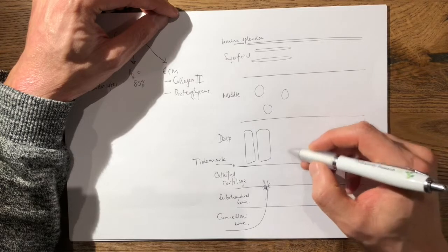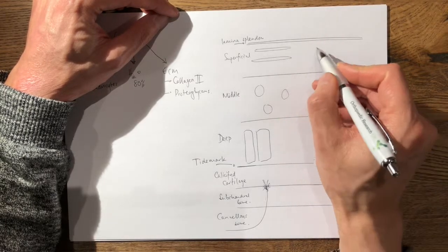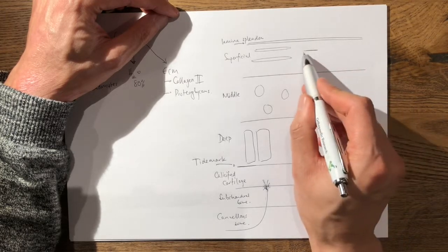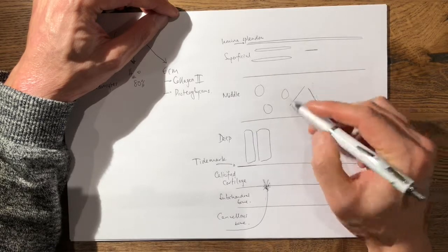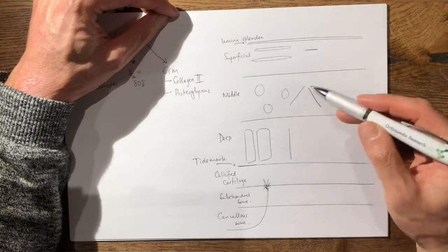Now we think about the alignment of the collagen II fibers. And similar to the cells, in the superficial layer, the collagen fibers are arranged much more transverse. In the middle layer, they're much more at 45 degrees. And in the deeper layer, they're more vertical.